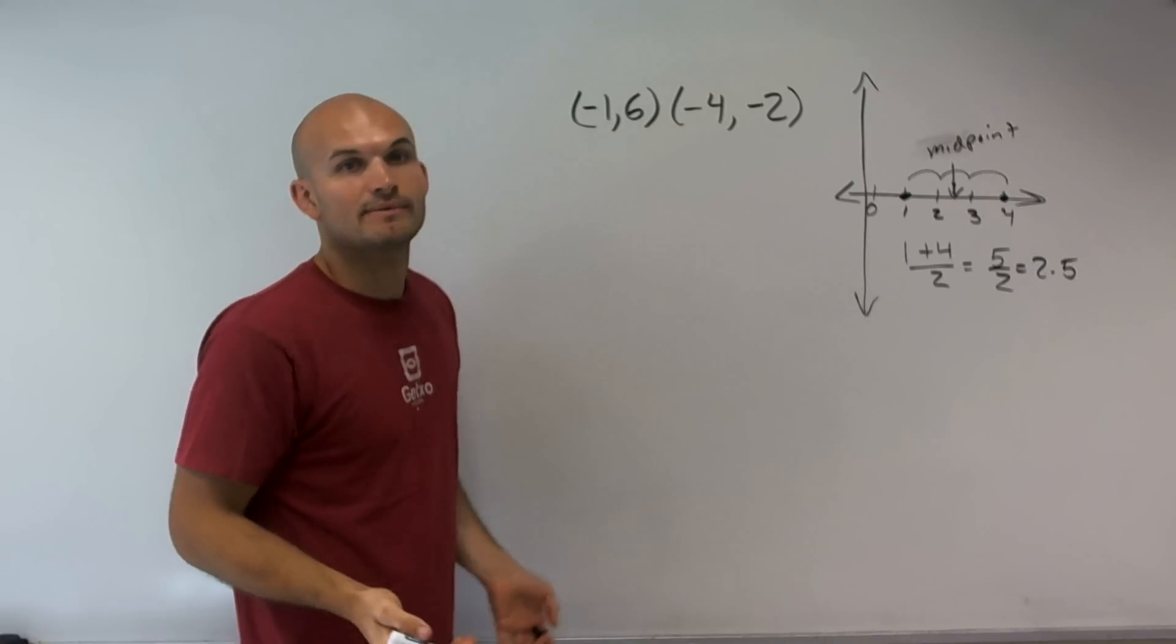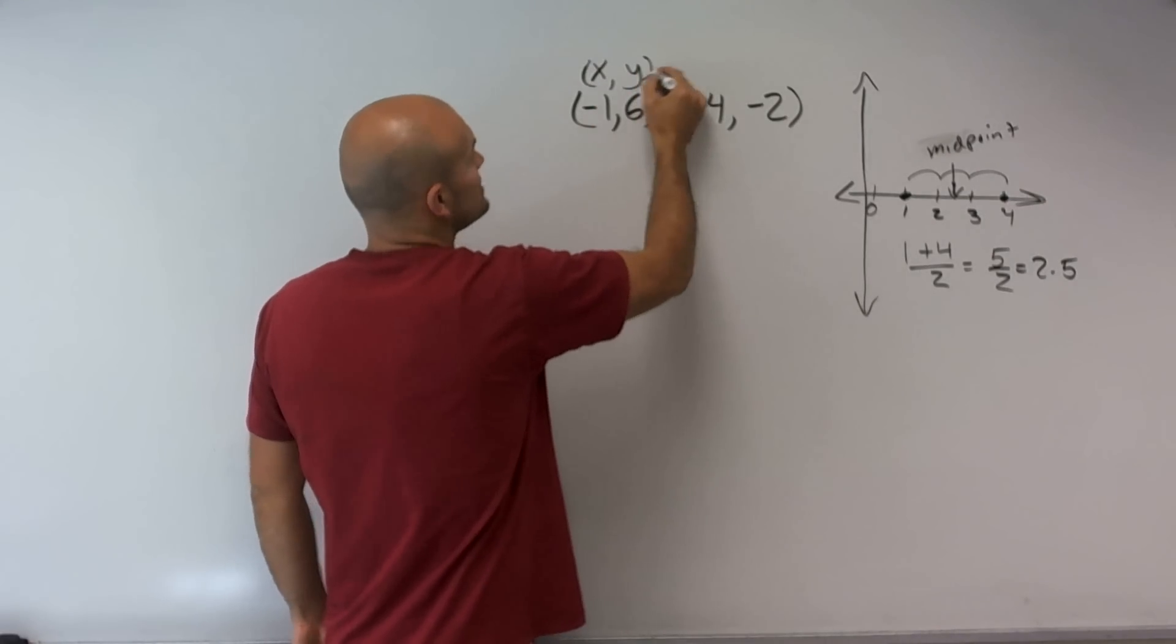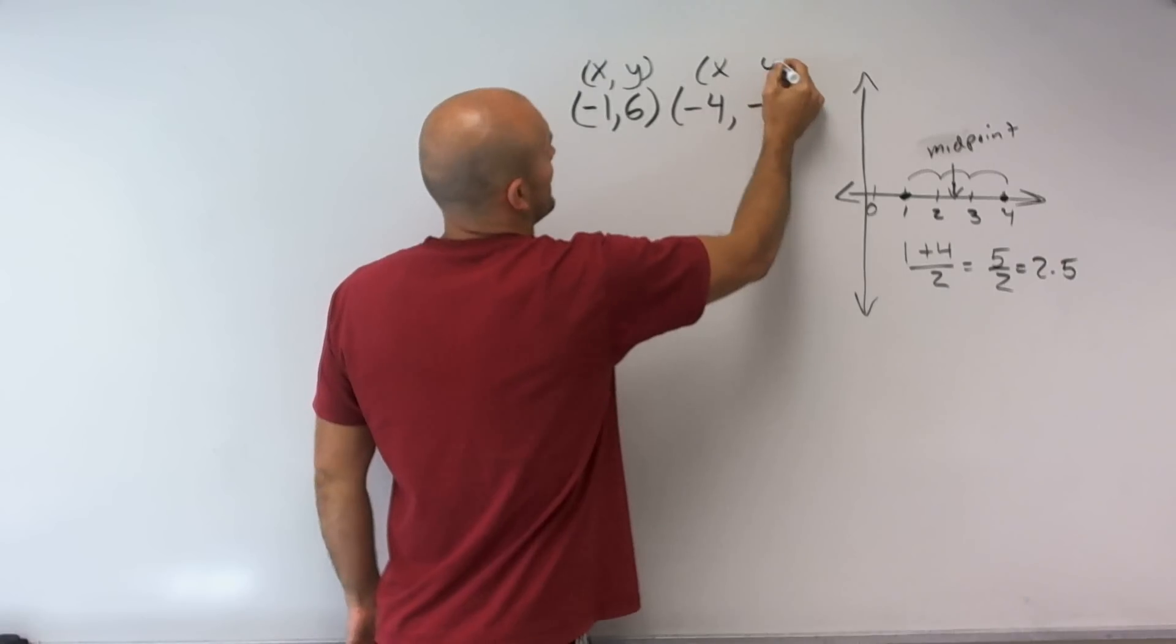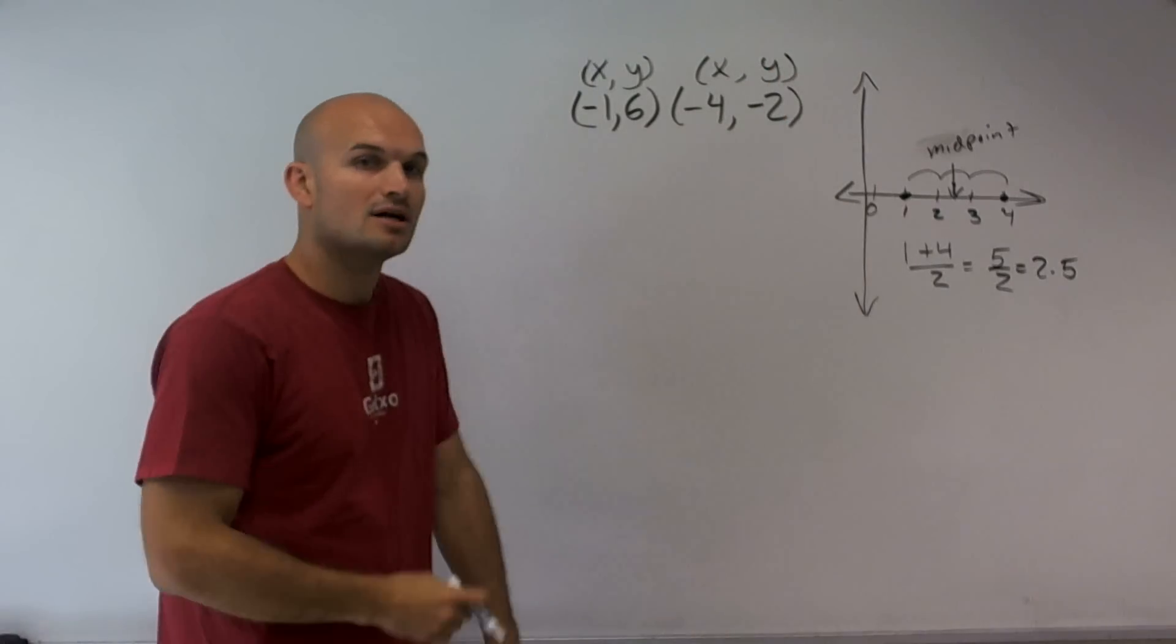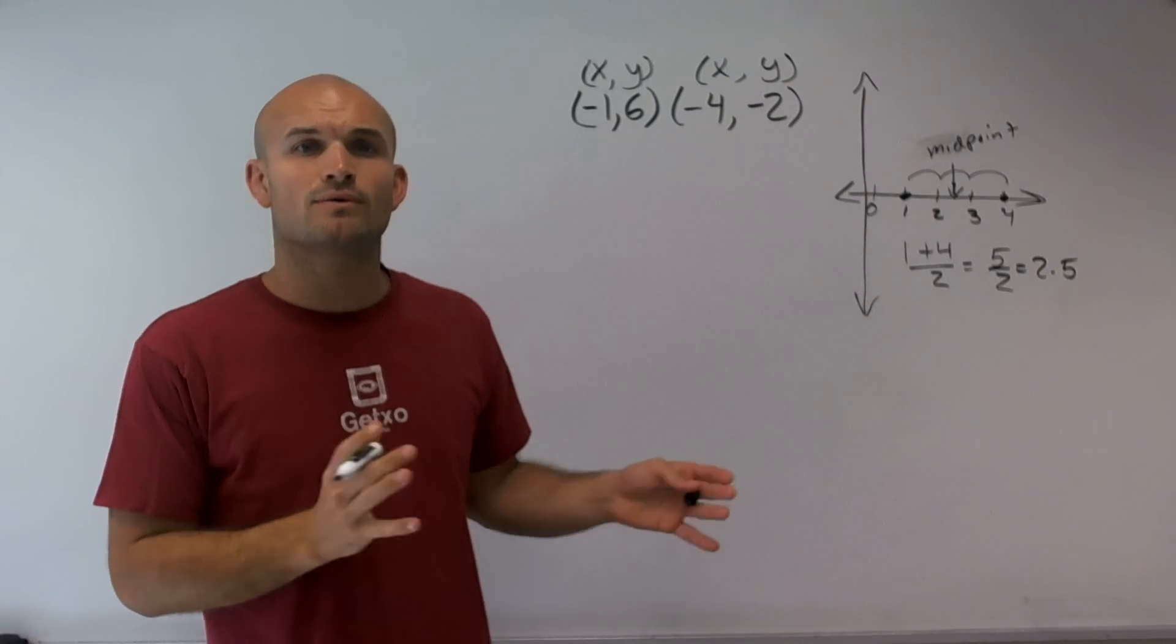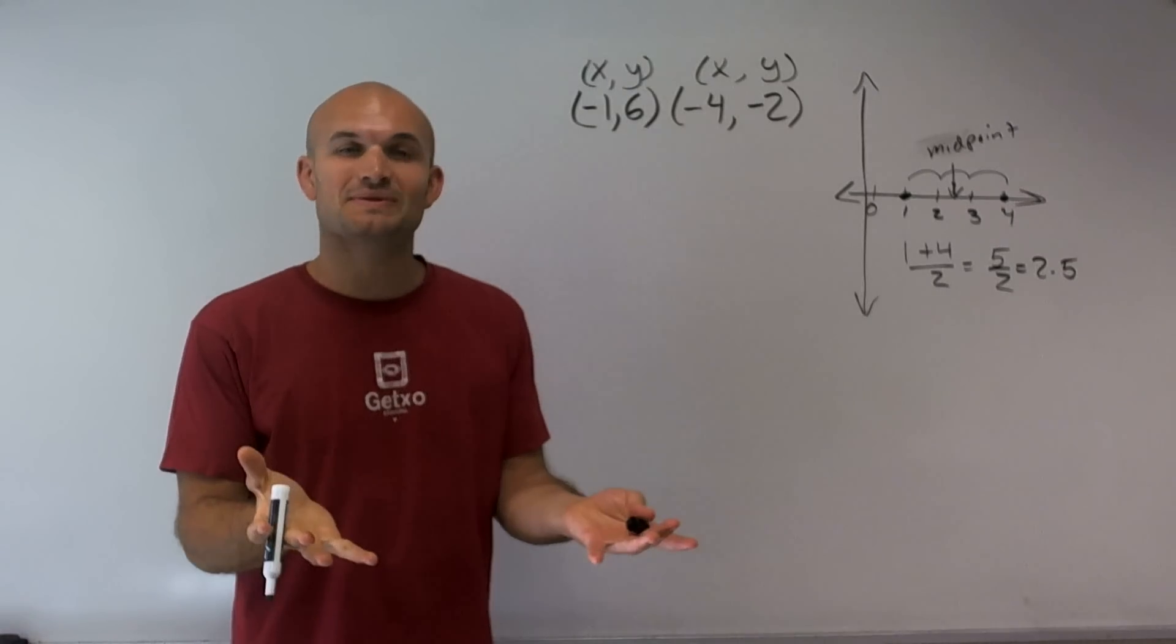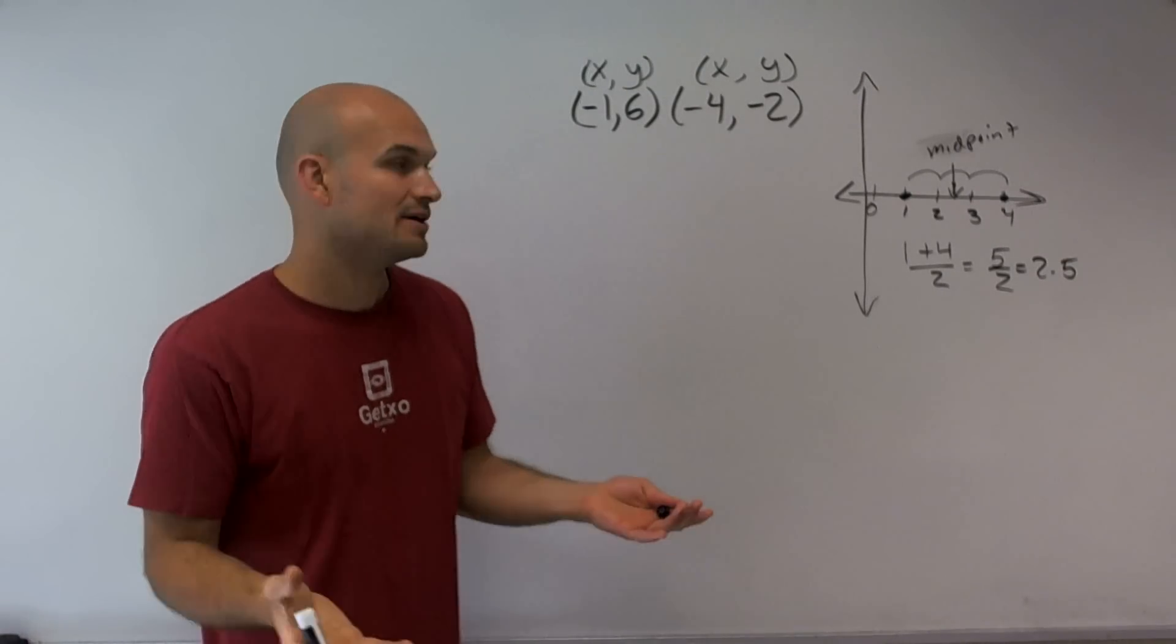So for this problem, we need to determine what are our x values and what are our y values. Well, remember, a coordinate point comes in x, y and x, y. And what we talked about with the distance form is a way to distinguish between x1 and y1. I'm sorry, the way to distinguish between the x values and the y values of your coordinate point.